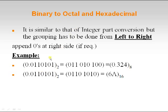Let us take an example. For a binary fractional number, to convert to octal I group 3 bits from left towards right: 011, 010, and since there is only one bit remaining I append zeros at the right side. Appending zeros on the right side of the fractional part does not modify the value. The octal equivalent is then 3, 2, and 4.